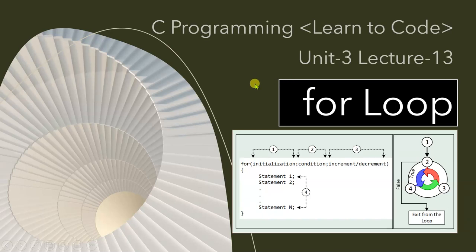Welcome to the course on C programming, Learn to Code series. This is the 13th lecture of Unit 3, and in this lecture we will discuss about the for loop — another control statement like while and do-while loops.